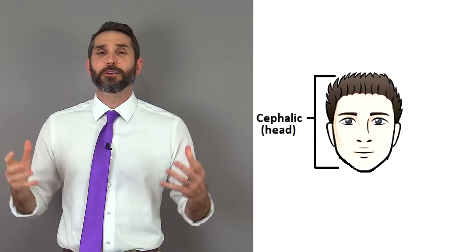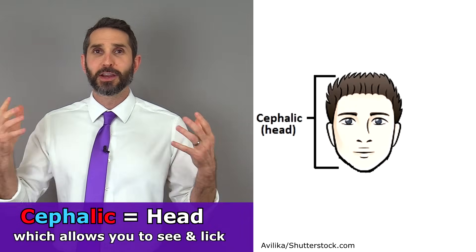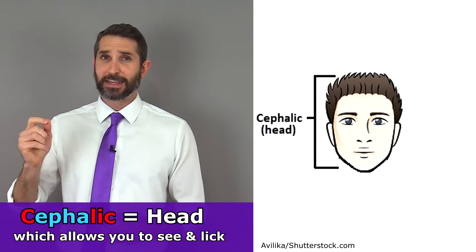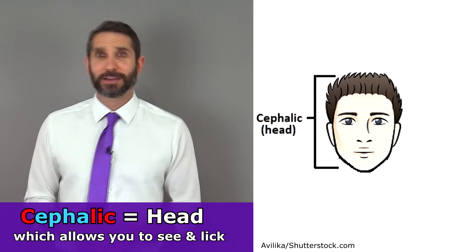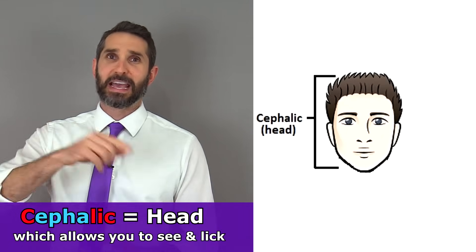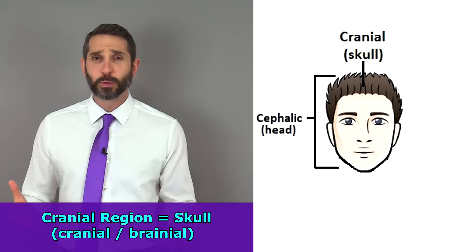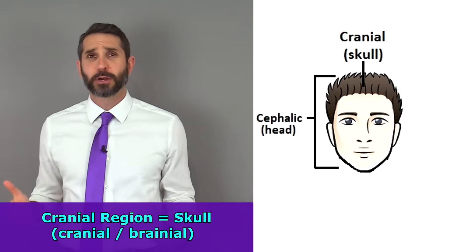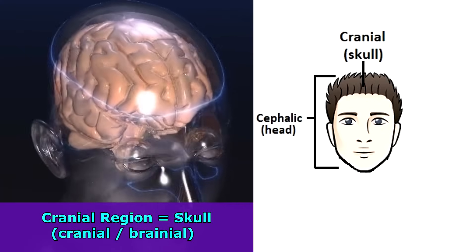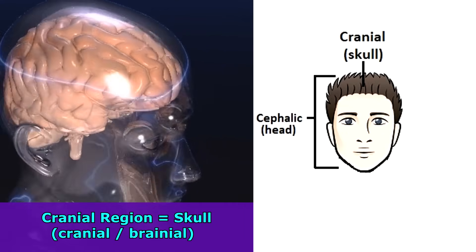Now let's look at some areas within the axial region, starting with the head. The word 'cephalic' refers to your entire head region. Notice it starts with C and ends with 'lic' — which region of the body has structures that allow you to see and lick? Next, 'cranial' refers to the skull. Cranial and 'brainial' kind of rhyme, and that's what the cranium does — it houses the brain.